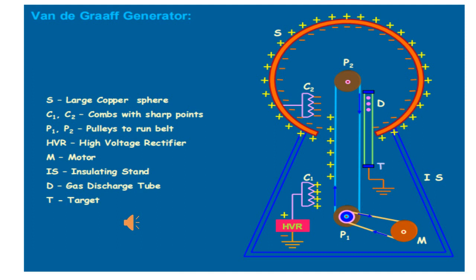The comb C2, being negatively charged, causes electric wind by spraying negative charges due to the action of points, which neutralizes the positive charges on the belt. Therefore, the belt does not carry any charge back while descending. Thus, the principle of conservation of charge is obeyed. The process continues for a longer time to store more charges on the sphere, and the potential increases considerably.